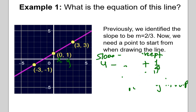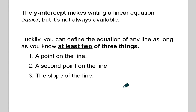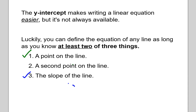That's what a lot of students remember from any algebra class — the slope-intercept form. But the Y intercept is not always available. You don't always know where the line is crossing the Y axis, or what the Y value is when X is 0. Luckily, you can define the equation of any line as long as you know at least two of the following three things: you always need one point on the line, and the second piece of information is either a second point or the slope — those are interchangeable.